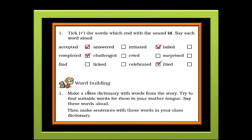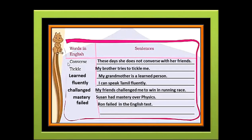Our next textual exercise is word building. Make a class dictionary with words from the story. Try to find suitable words for them in your mother tongue. Say these words aloud. Then make sentences with those words in your class dictionary. So children, here you will have to find out some difficult words from the lesson The Scholar's Mother Tongue and find out the suitable words used for these in your mother tongue. Then you will have to make sentences out of these words. Here are some of the difficult words picked by me from the lesson. I have also written down sentences using these words.